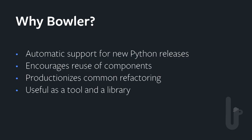The reason to use Bowler over some of the other tools is that because it's built on lib2to3, there'll be automatic support for new Python releases as they come out. It was designed to allow for composable pieces of refactoring that you can reuse in the future, which allowed us to productionize some of our refactoring tools and get more long-term lasting value out of them. Rather than needing to rebuild this every time you have a similar use case, you can either reuse one exactly or take the pieces and put them back together in different arrangements. It was designed to be useful as both a tool and a library — you can use it as a CLI command or integrate it with other software to automate a lot of this.